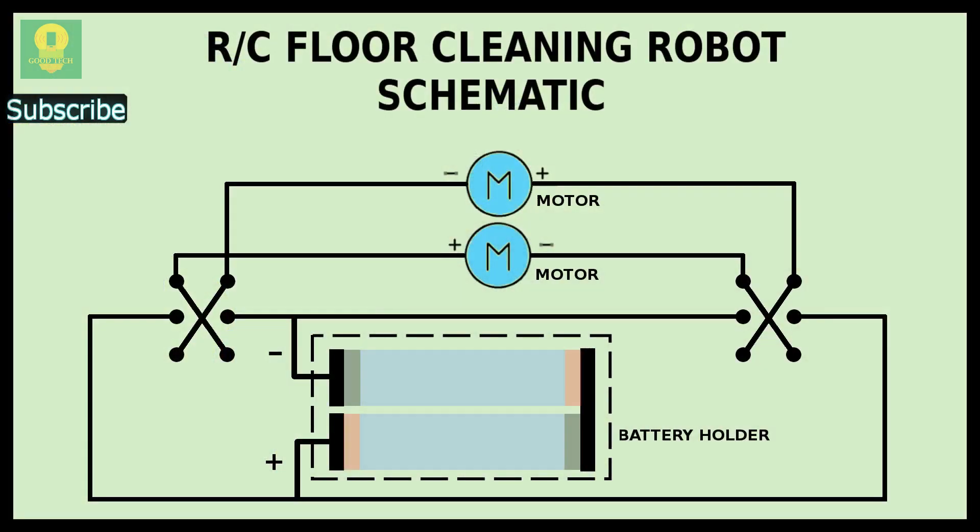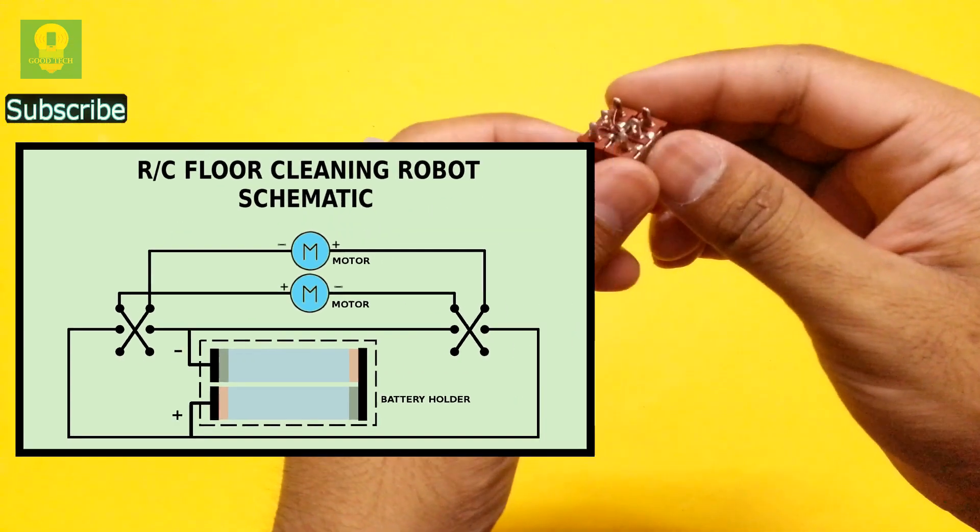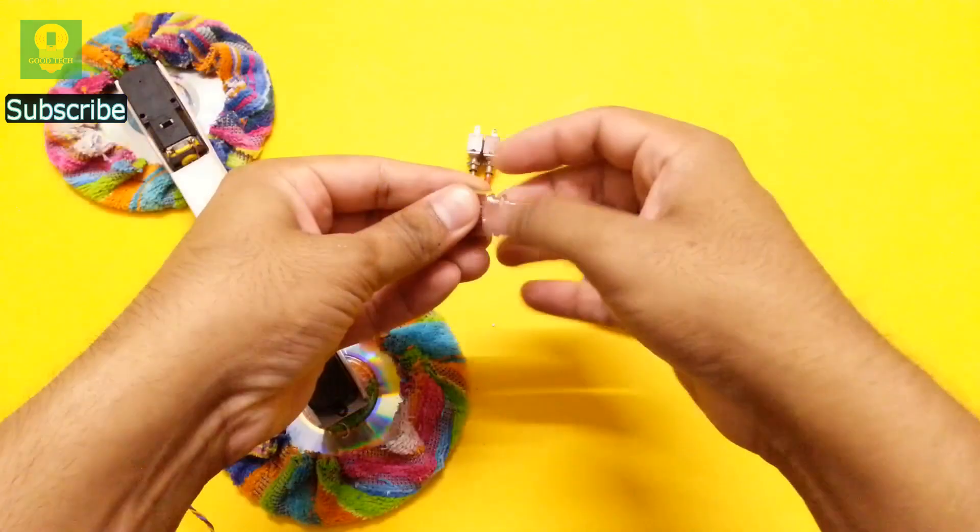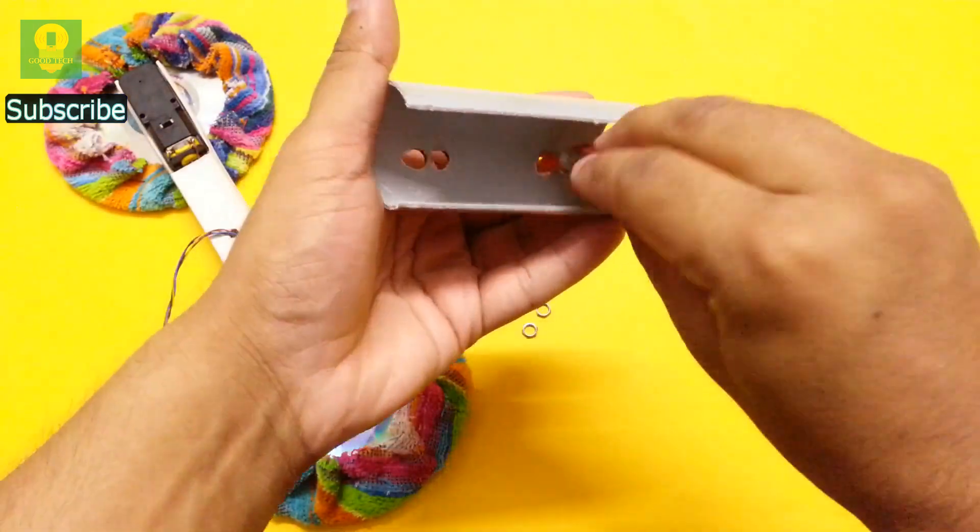Now refer to the schematic and make connection between the switches. Insert and attach the switches to the PVC pipe.